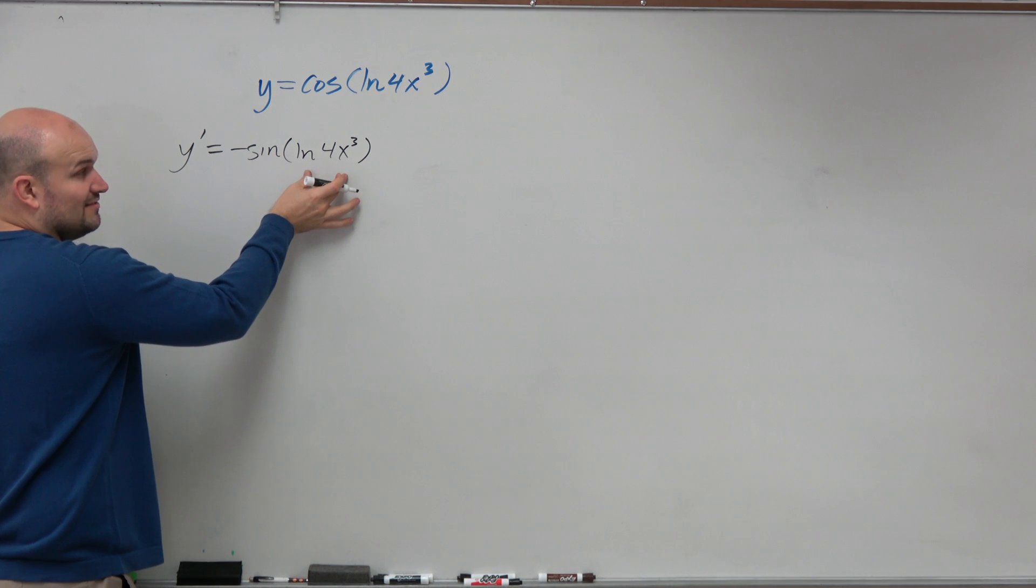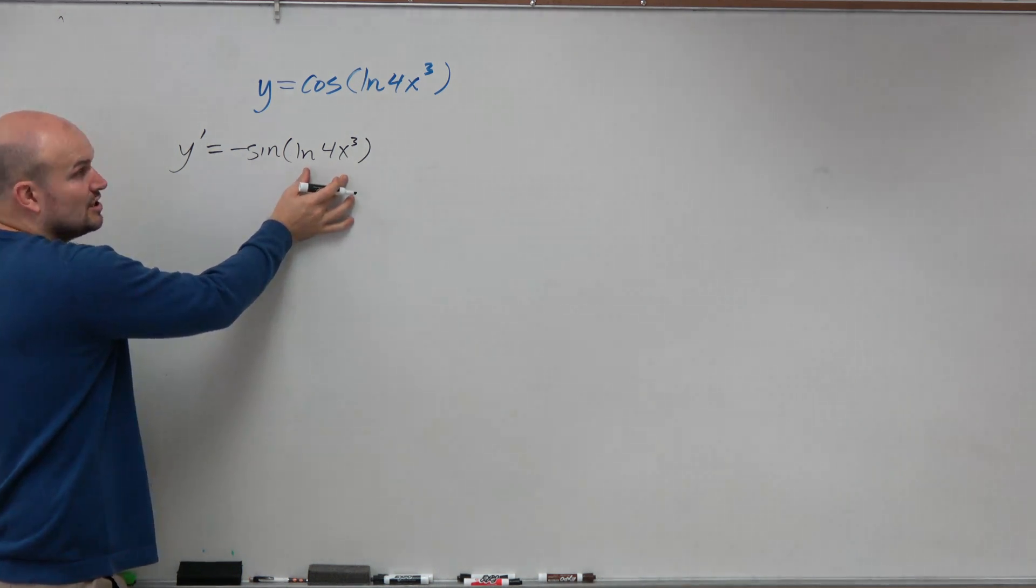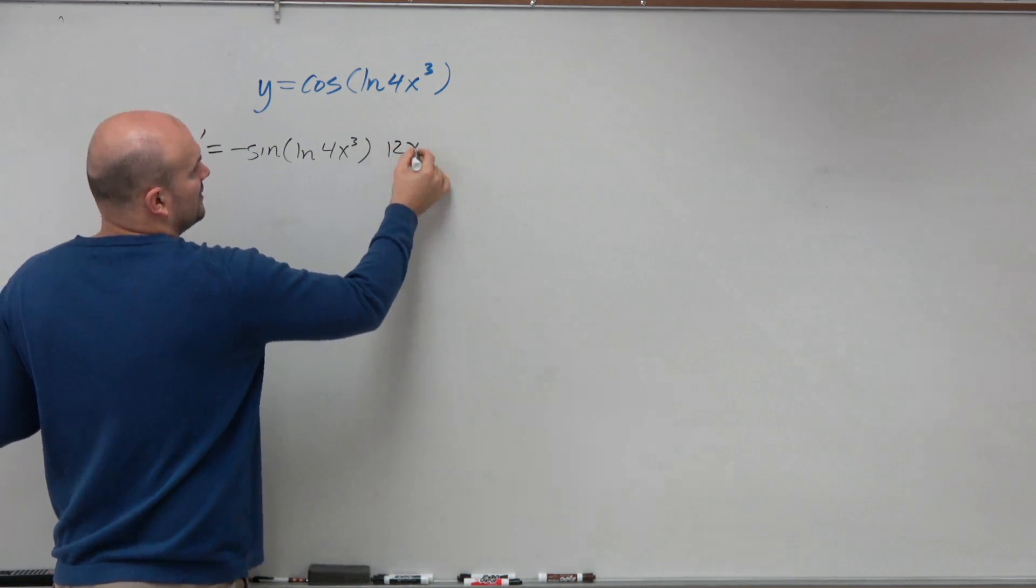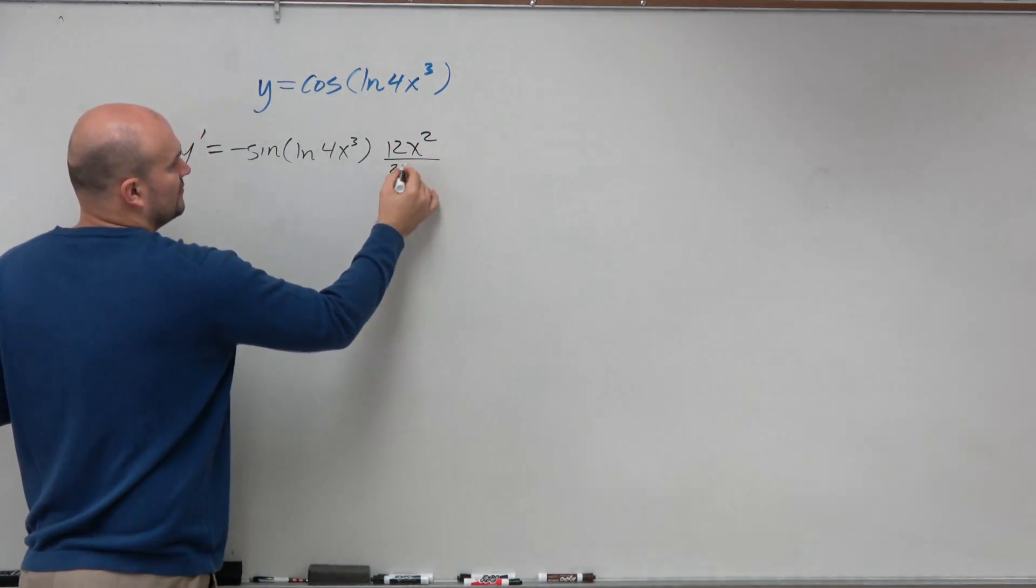times the derivative of our inside function. So again, which is u prime over u. So u prime in this case is going to be 12x squared over 4x cubed.